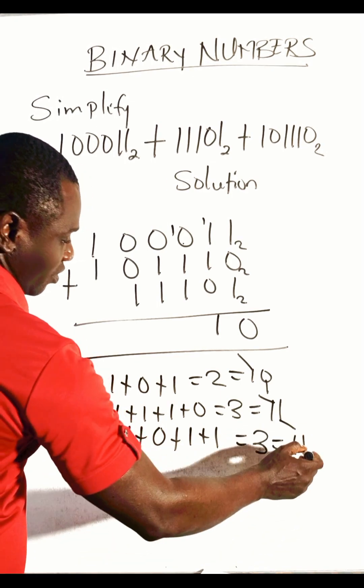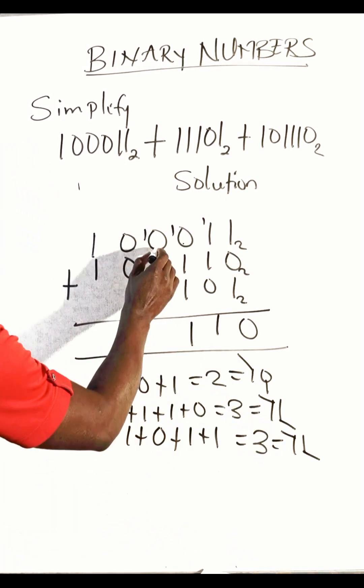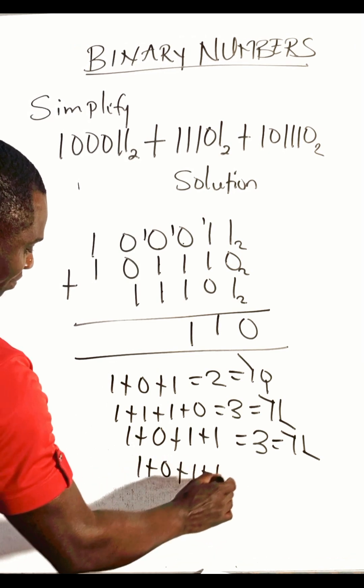Carry this. We add again. One plus zero plus one plus one gives us three. Three is always eleven, so write down one, carry one.